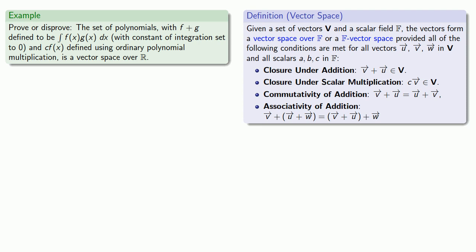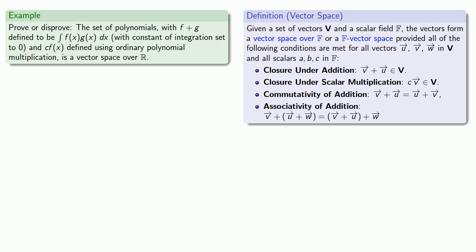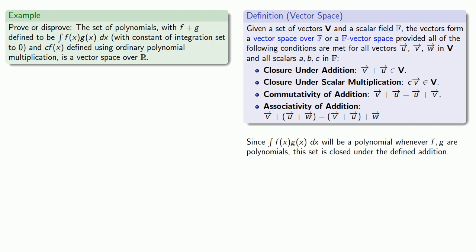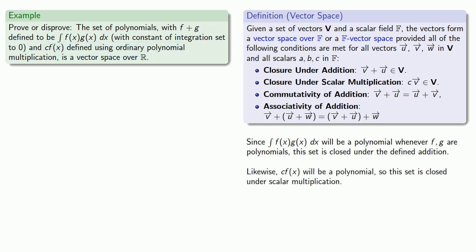We'll check our properties. First, closure under addition: if I take two polynomials f and g and add them according to this definition — the antiderivative of the product — do I get another polynomial? The product of two polynomials is a polynomial, and the antiderivative of a polynomial is a polynomial, so this set is closed under the defined addition. For scalar multiplication, since it is defined using ordinary polynomial multiplication, c·f(x) will still be a polynomial, so the set is also closed under scalar multiplication.